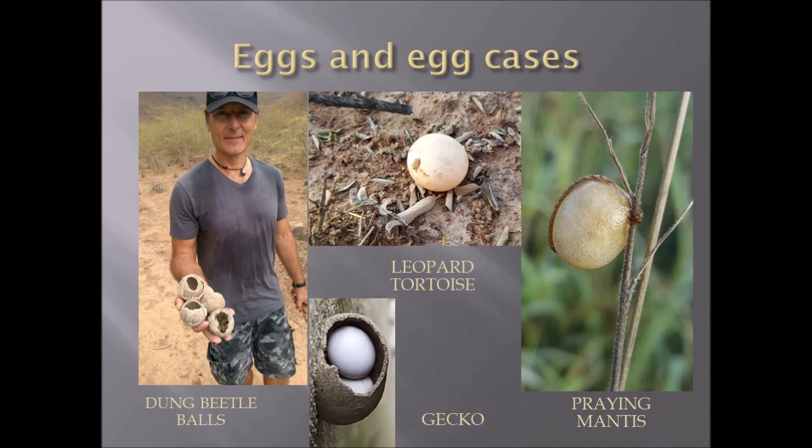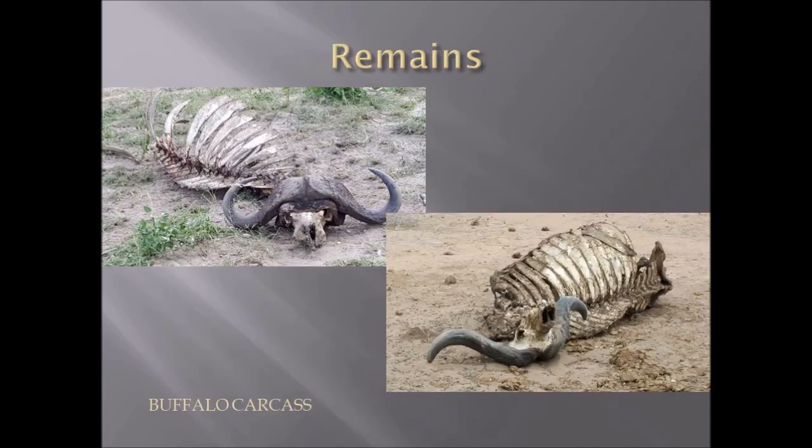Eggs and egg cases: on the left are dung beetle balls excavated and fed on by honey badger larvae; on the top middle is a leopard tortoise egg; on the bottom are gecko eggs laid in a potter wasp nest; and on the right-hand side is a praying mantis ootheca.